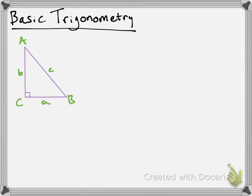And you might recall from grade 9 that the side lengths of a right-angled triangle are related by the Pythagorean theorem: c squared is equal to a squared plus b squared.